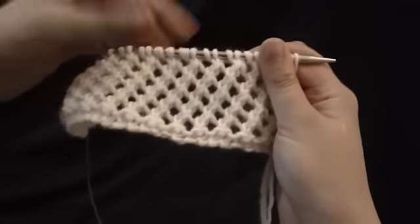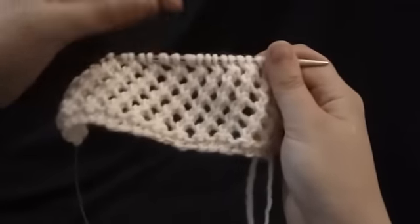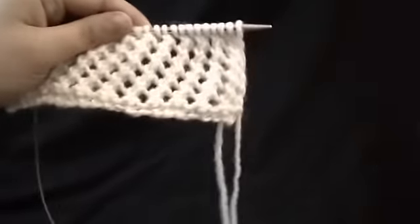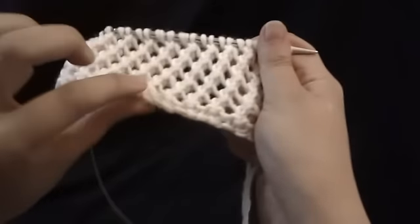But if you bound it off traditionally, this end would be pretty tight. You wouldn't be able to block it as open as you would the cast on edge.